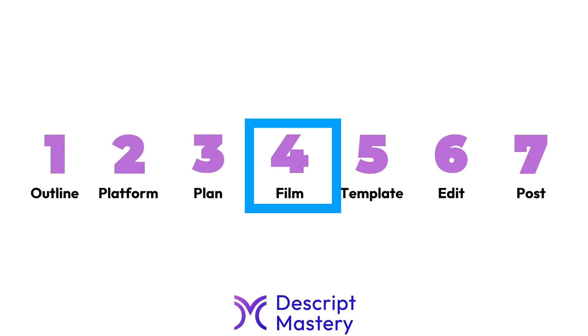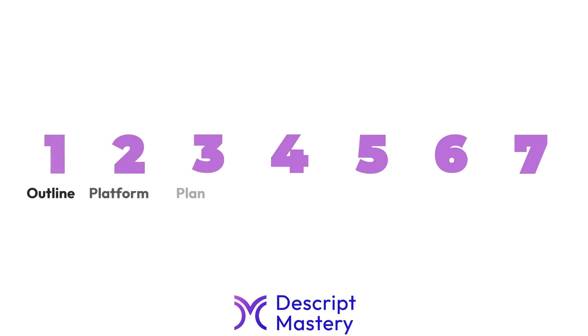Now that you've laid the groundwork for everything — possibly to the detail of writing scripts for all your lessons — it's time to go film. When you've got everything set up like that, you can batch this as much as possible. Whether you're doing this DIY or hiring a videographer, I recommend batching it all. Sit down over one full day or maybe several days and knock out all the filming as quickly as you can. Get the filming done and move on to stage five.